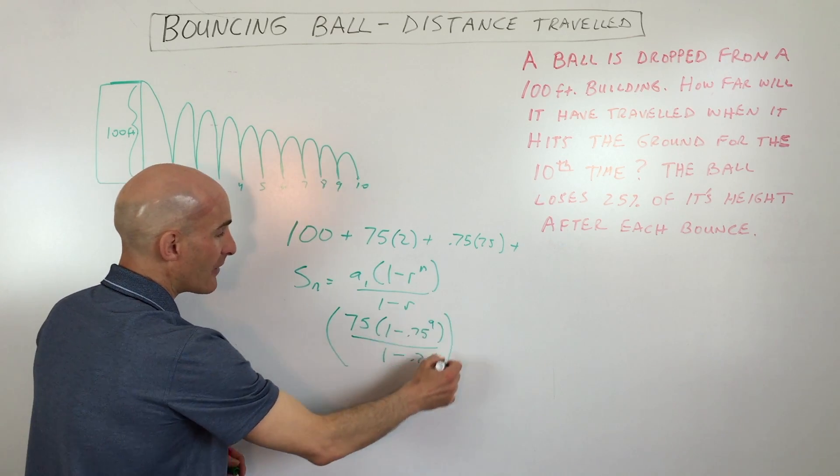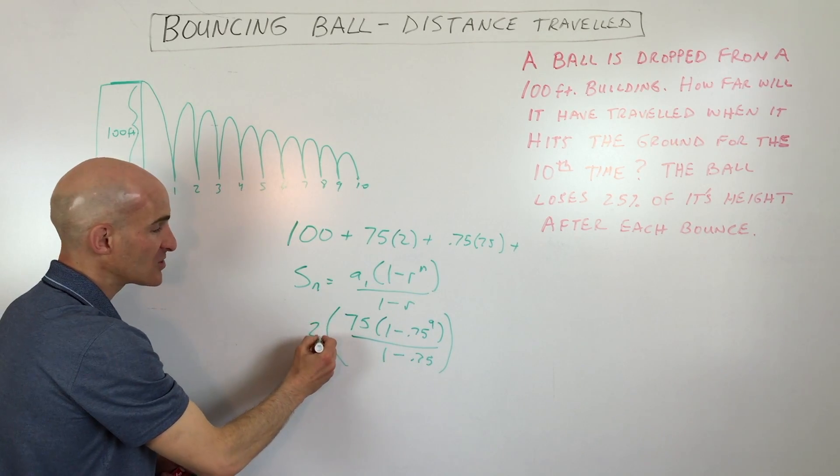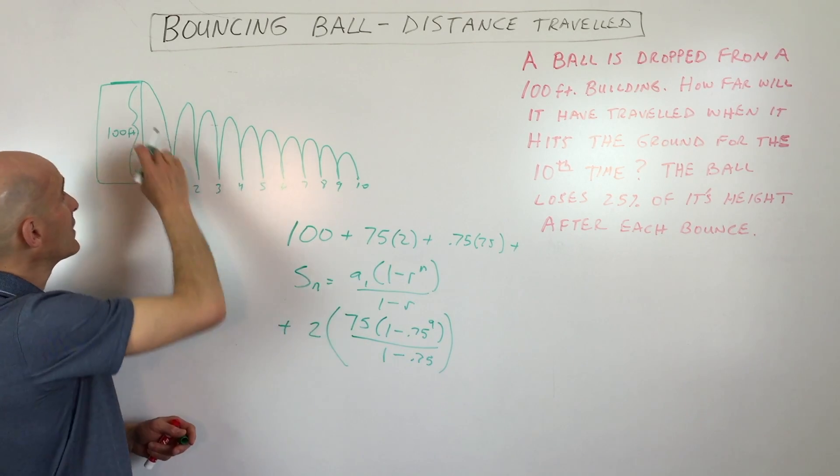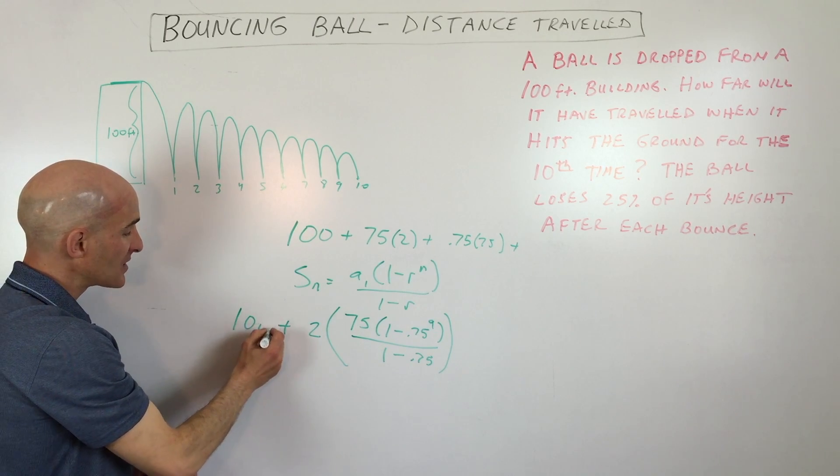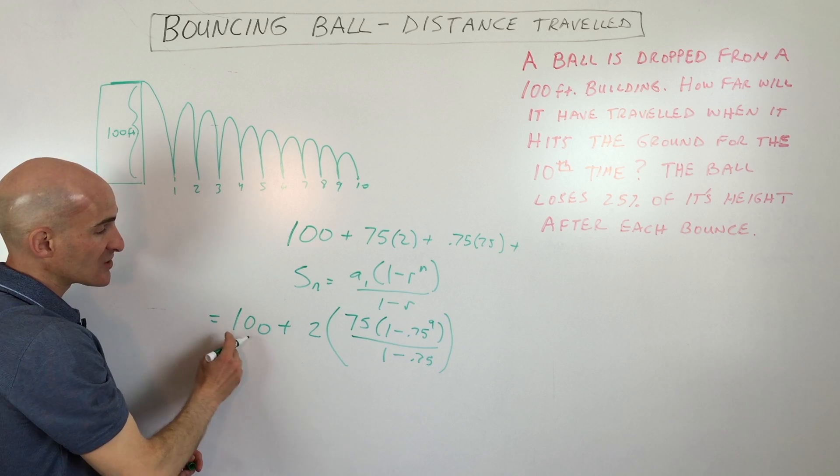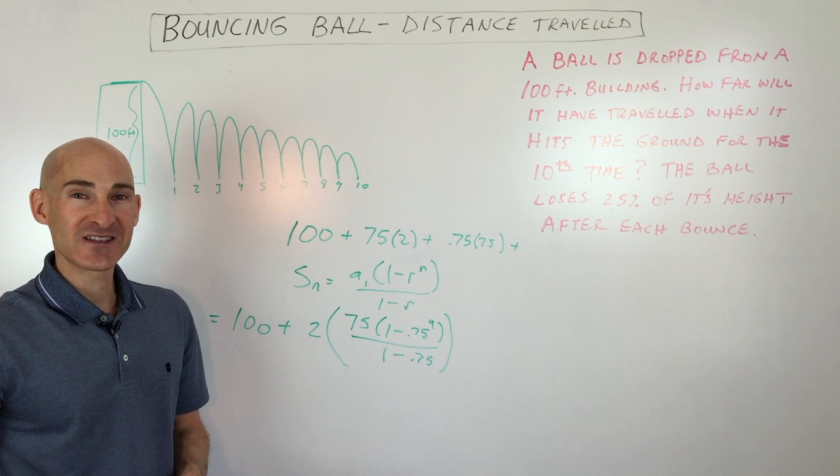And then what we're going to do is we're going to take that and we're going to double it because we want to count the up and down. So that's going to be times two, plus we're going to add that initial drop, that 100 feet drop. And so that's going to be 100. So this will give us the total distance traveled. And I hope that makes sense to you.